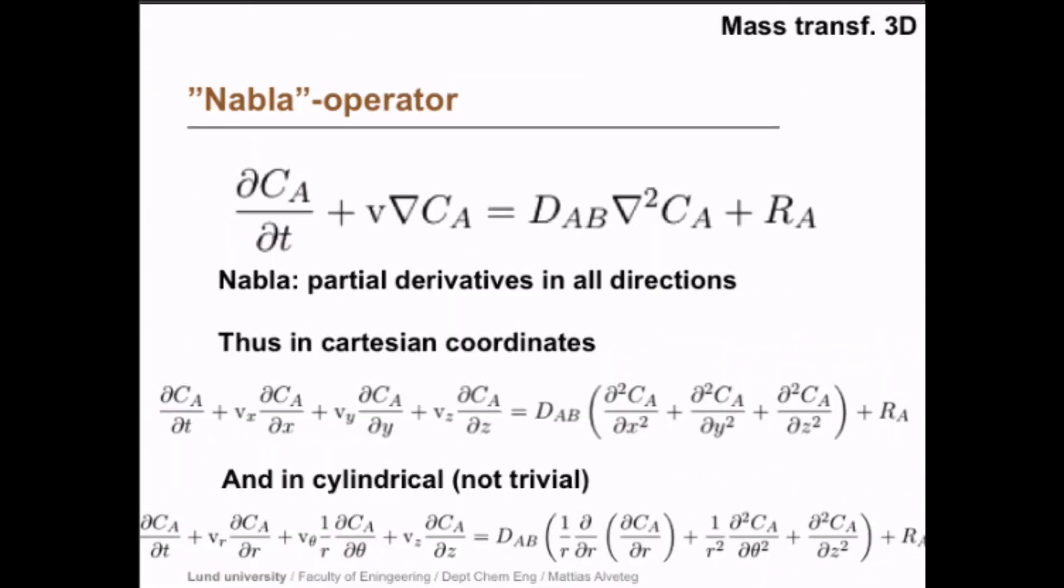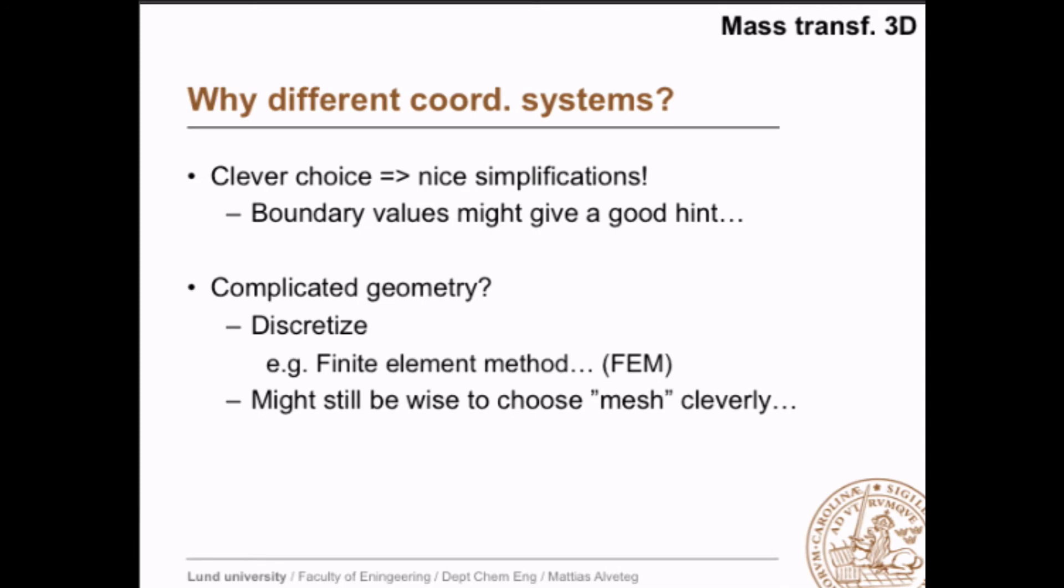And this might seem messy, but actually, by choosing the coordinate system cleverly, you can sometimes get nice simplifications and don't need to work so much with finding a solution. And the boundary values might give a good hint as to what kind of coordinate system that is best to use. If you have a complicated geometry, you need to discretize and use some kind of method like the finite element method or so, which is implemented in COMSOL Multiphysics. But it might actually still be wise to choose the mesh, the subdivision, cleverly. But that's kind of advanced. But if you go into deeper studies into this, you might figure out that if I choose the mesh cleverly, how it's divided, I might actually be able to calculate things faster. In this course, we don't care. We simply let COMSOL Multiphysics divide it in whichever way it wants.